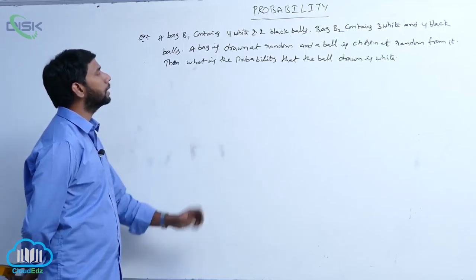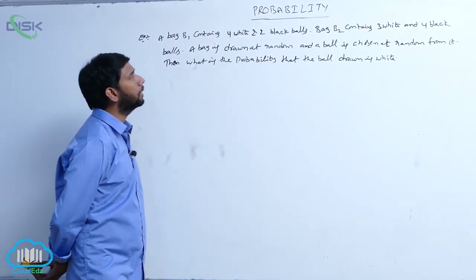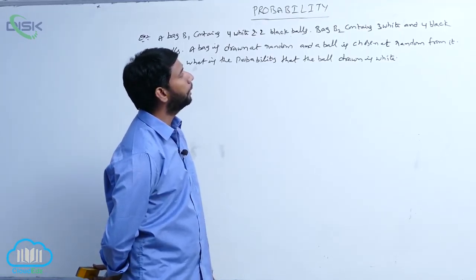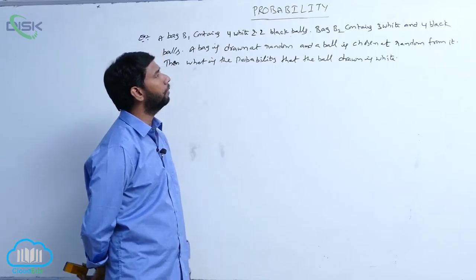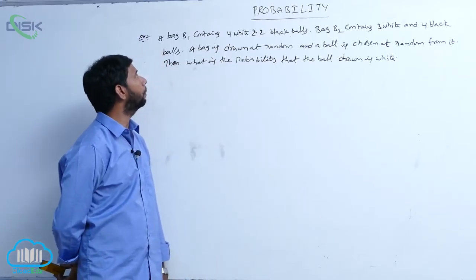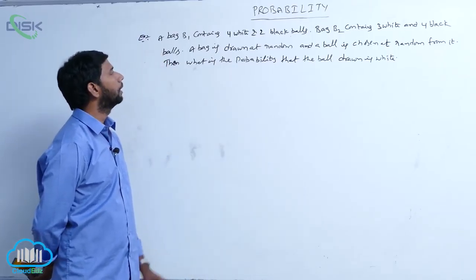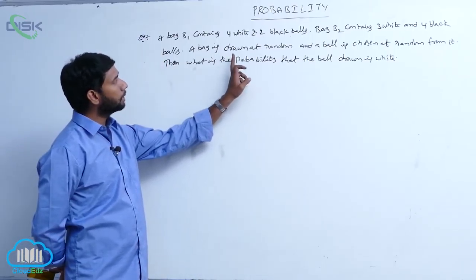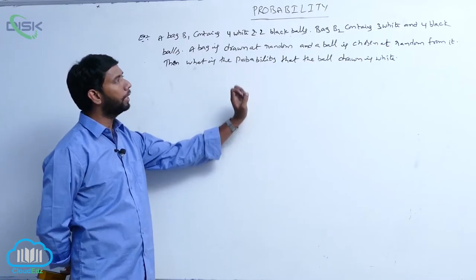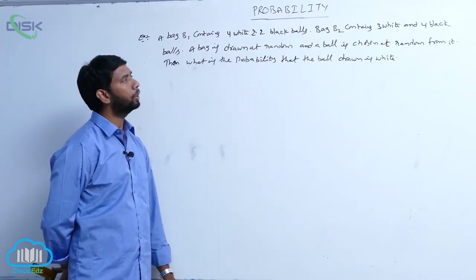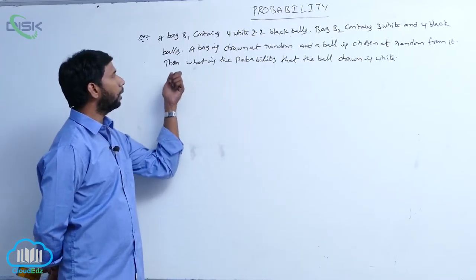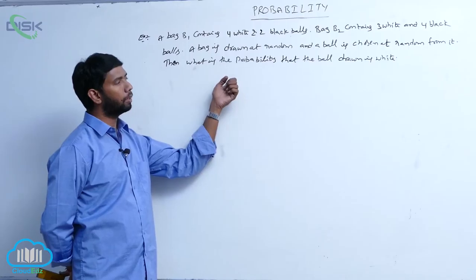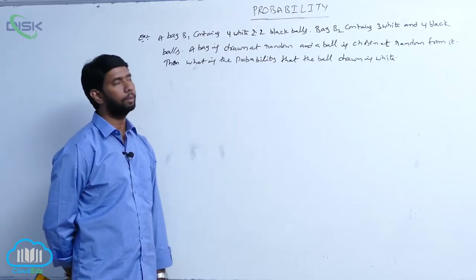Bag B1 contains 4 white balls and 2 black balls, and bag B2 contains 3 white balls and 4 black balls. A bag is drawn at random and a ball is chosen at random from it. What is the probability that the ball drawn is white?